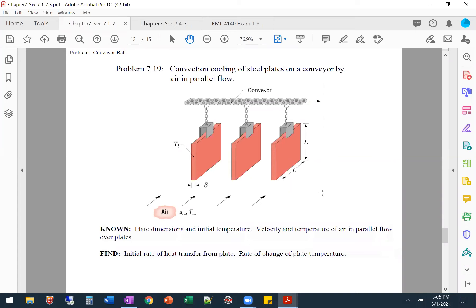We're looking for, and they give us parameters of the plate. First off, we're looking for the initial rate of heat transfer from the plate, and then the rate of change of plate temperature. So we have our plate, boundary layer plate. Initial rate of heat transfer from the plate is going to be our heat off of that plate. And then the rate of change of the plate temperature is just the DT of the plate DT.